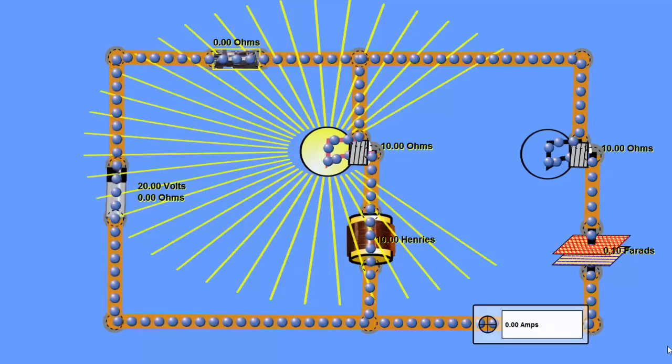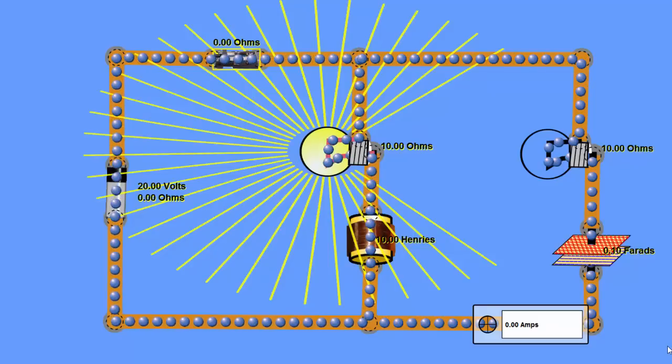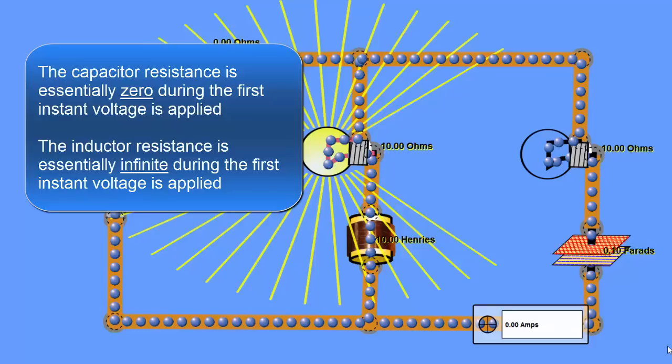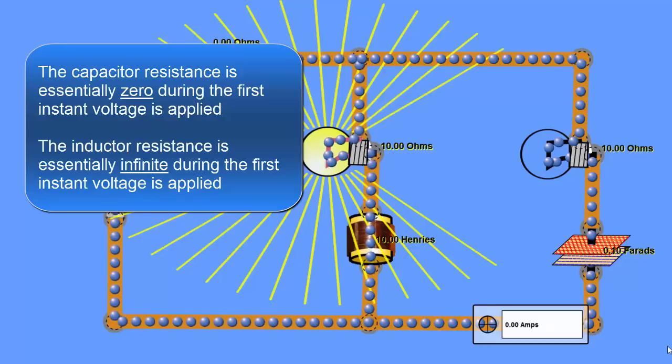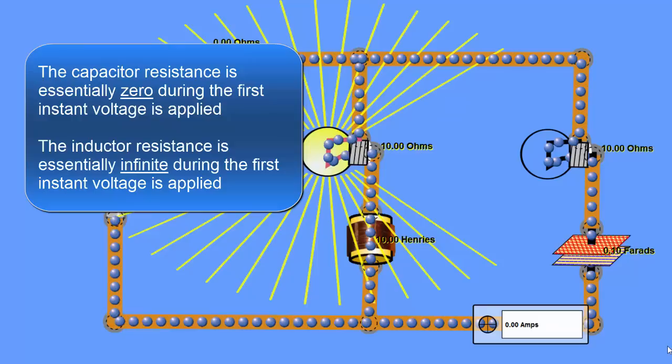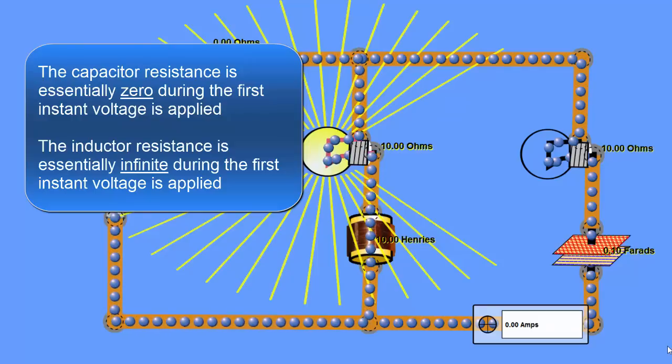One is a dead short over a long period of time and one is an open circuit over a long period of time. The capacitor acts like a short circuit during the first instant that voltage is applied to it, while the inductor acts like an open circuit during the first instant power is applied to it. So this is another one of those yin and yang things about these two components.